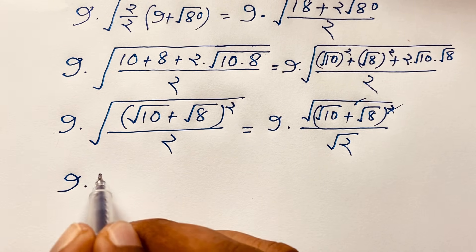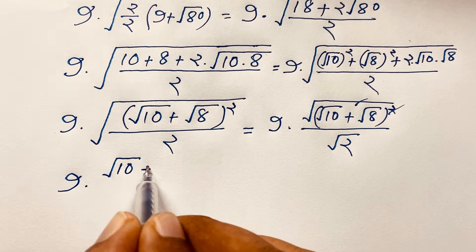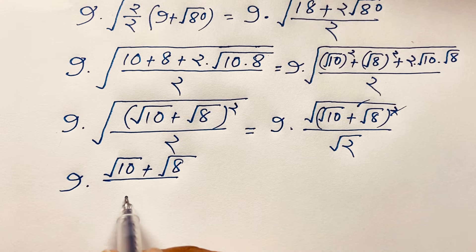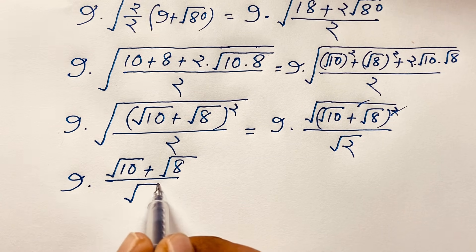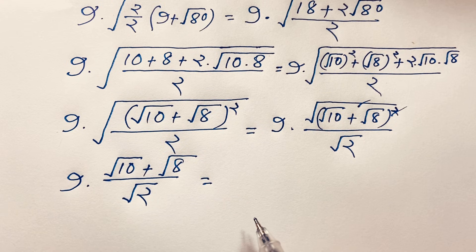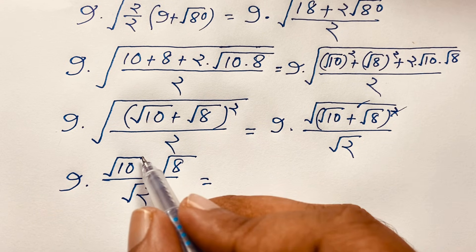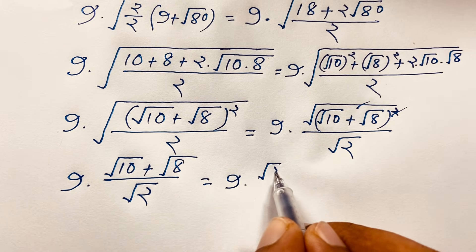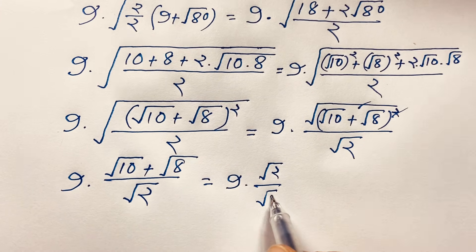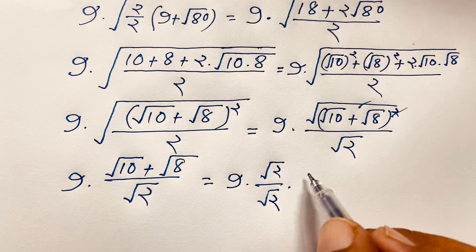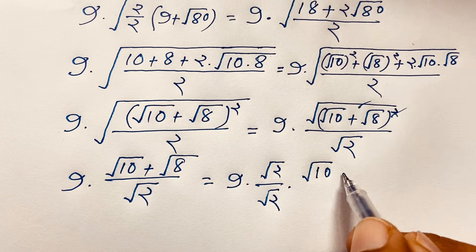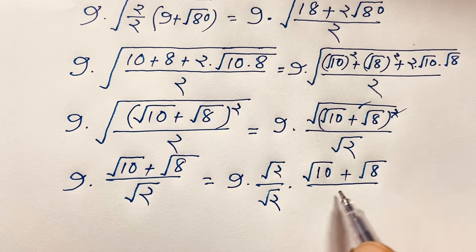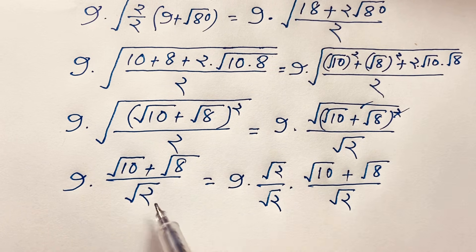After the square cancels, we get 9 times (square root 10 plus square root 8) over square root 2. To simplify, I multiply numerator and denominator by square root 2, so 9 times square root 2 over square root 2 cancels to 1, leaving square root (square root 10 plus square root 8) over square root 2.